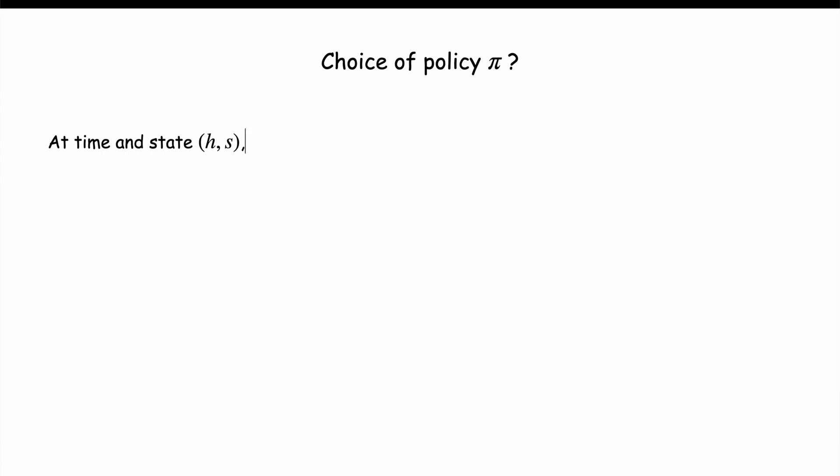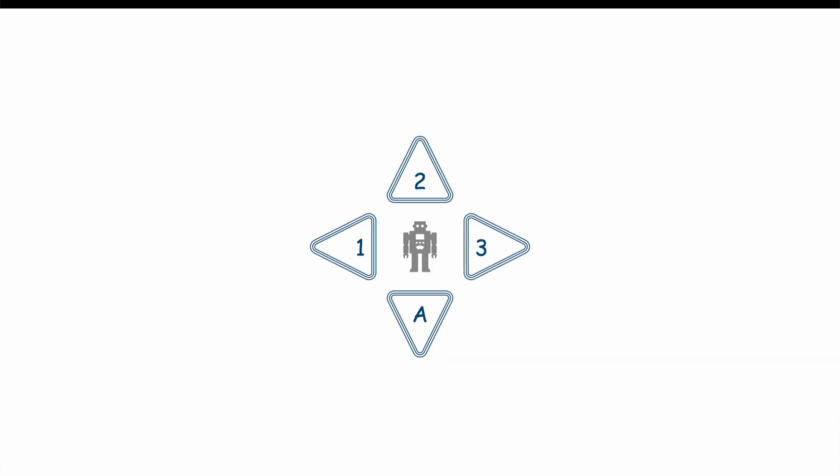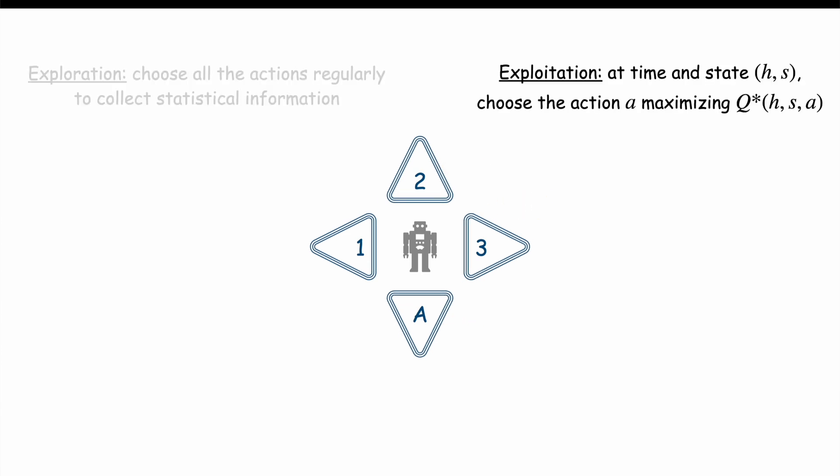The algorithm UCB. At every time and state Hs, the best action A maximizes the optimal Q function Q star of HsA. But Q star is unknown, so we need to estimate it. But to estimate it, our algorithm needs to carefully balance two factors. The exploration, choose all the actions regularly to collect information on the rewards and probability transitions for every time state and action. And the exploitation, at every time and state Hs, choose the action which seems to maximize our objective Q star.